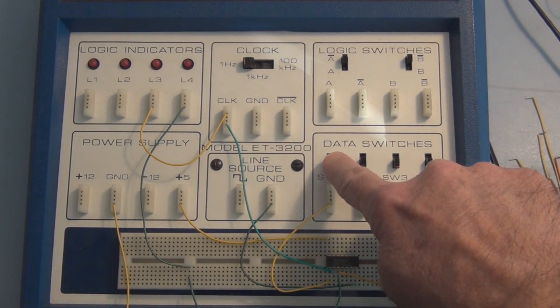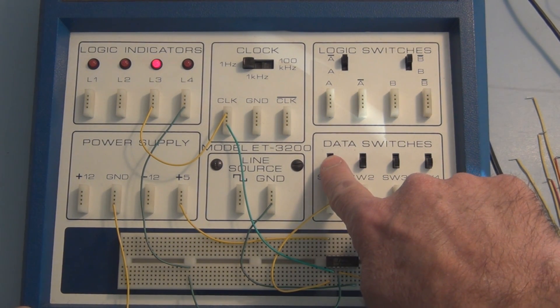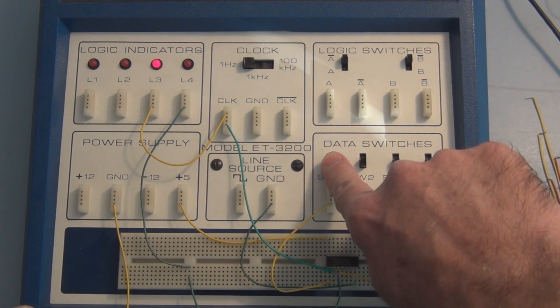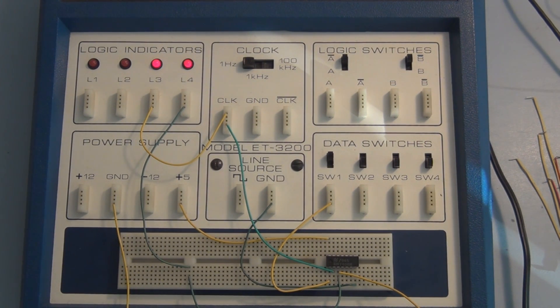So if I apply a one now to the input of the AND gate, and the clock is on the other input, this will then allow the square wave to pass through. You can see that.